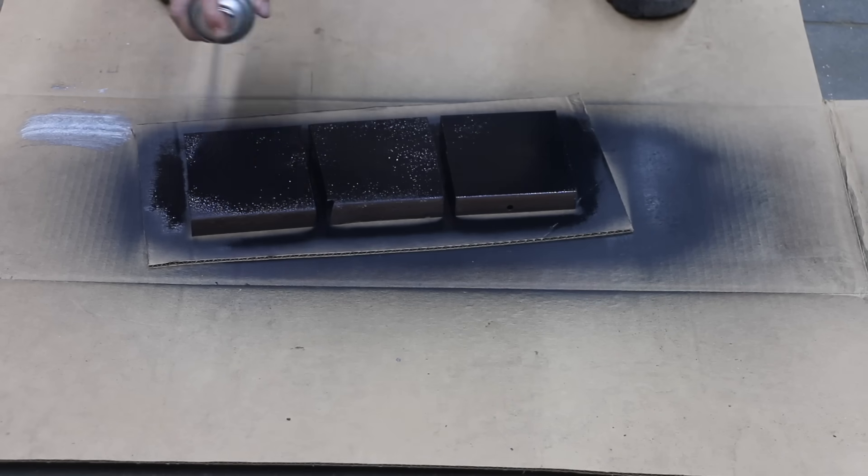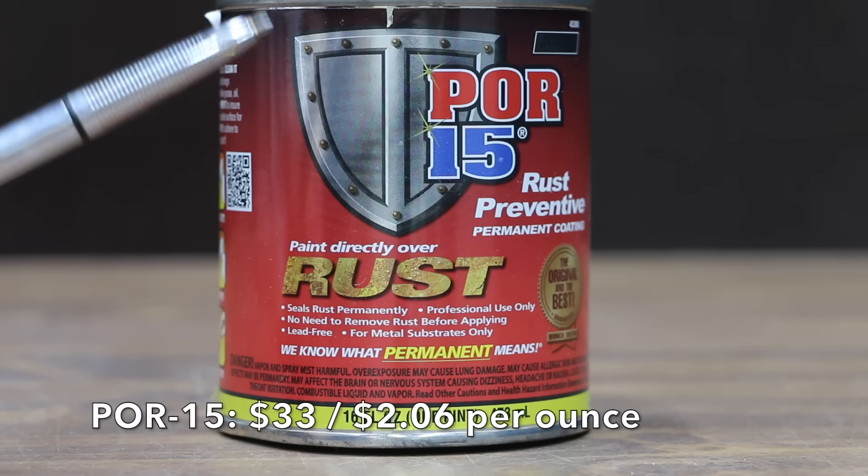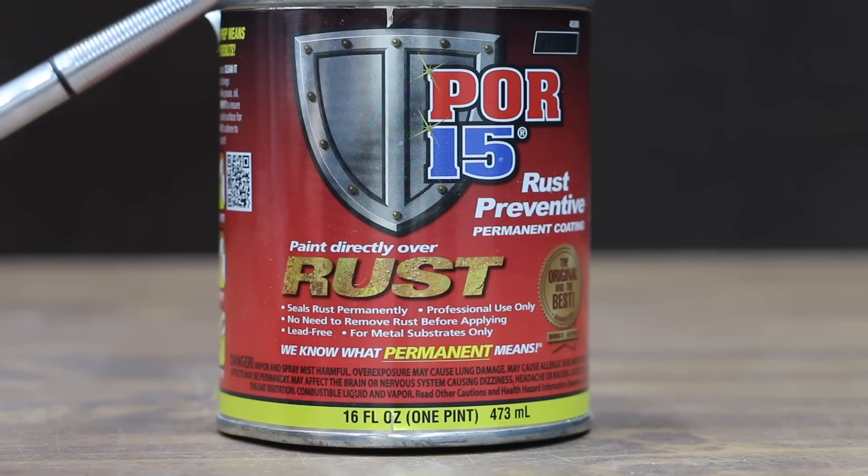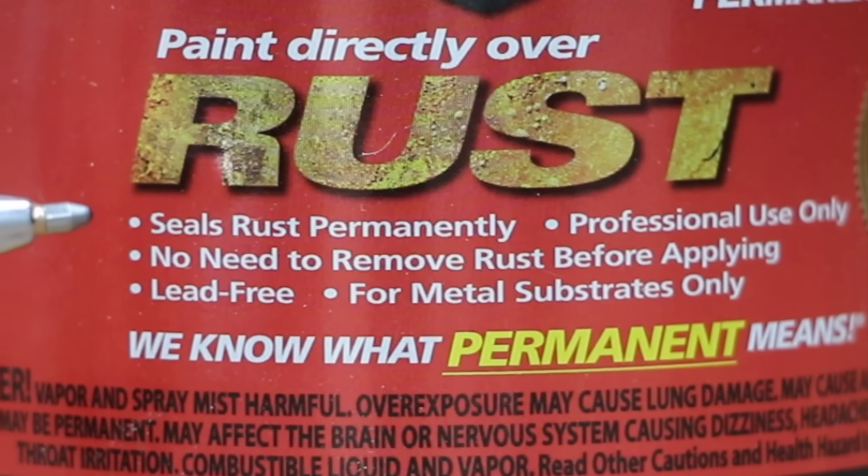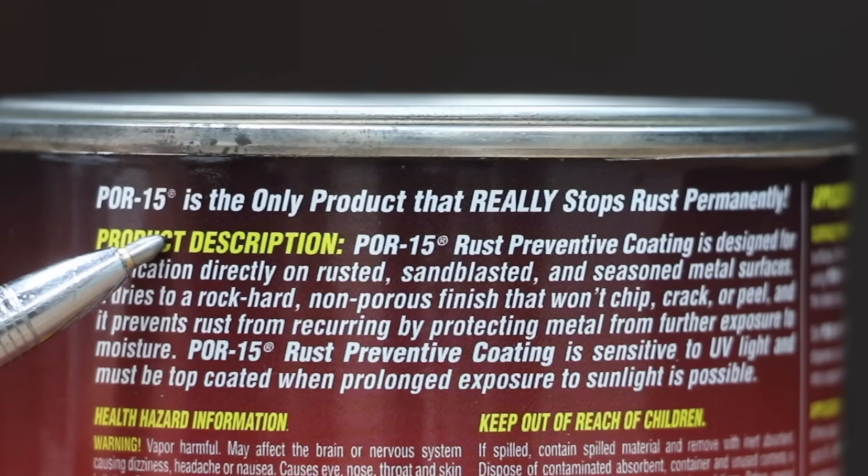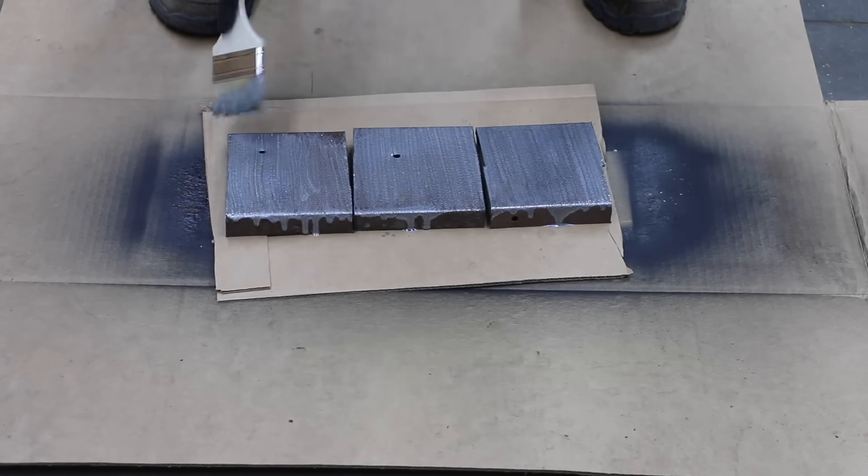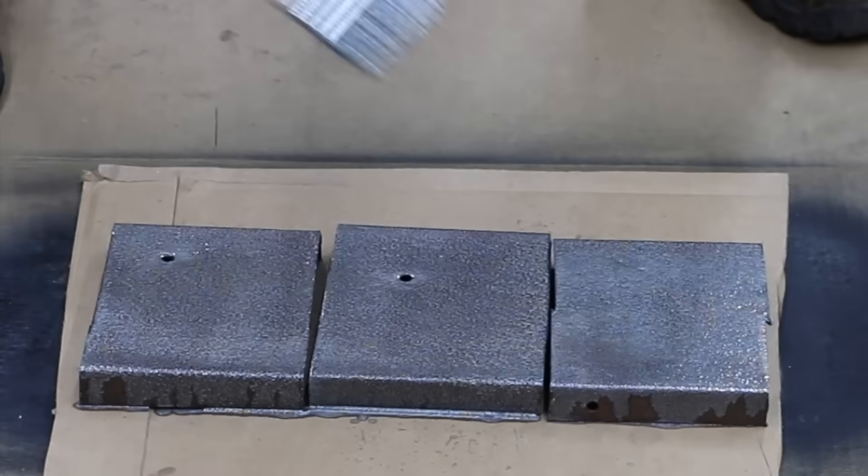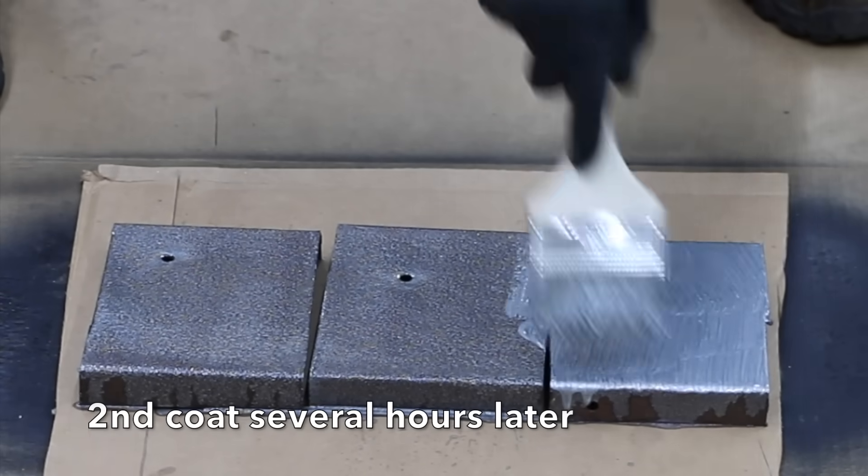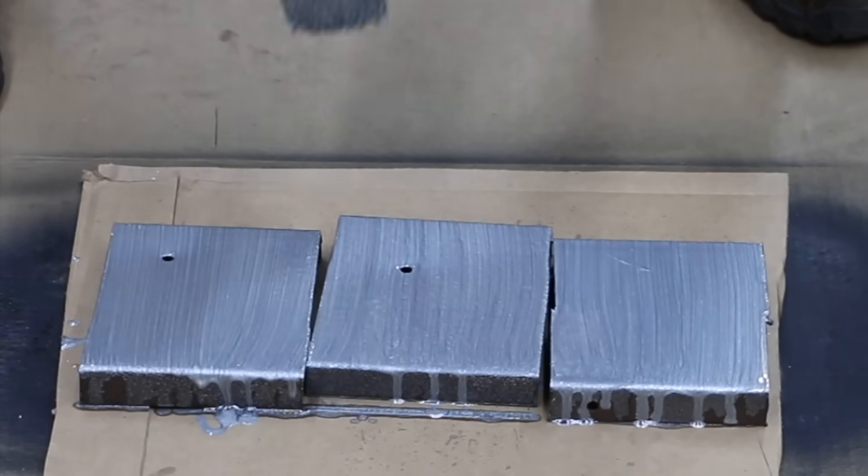And the most expensive product we'll be testing at $33 for 16 ounce or $2.06 per ounce is this POR-15. Seals rust permanently. Professional use only. No need to remove rust before applying. We know what permanent means. POR-15 is the only product that really stops rust permanently. POR-15 dries to a rock-hard, non-porous finish that won't chip, crack, or peel. It prevents rust from recurring by protecting metal from further exposure to moisture. The POR-15 is made in USA. After several hours, I applied a second coat of POR-15.